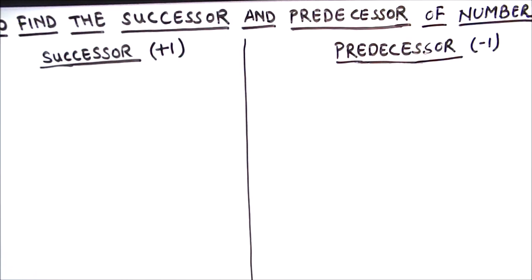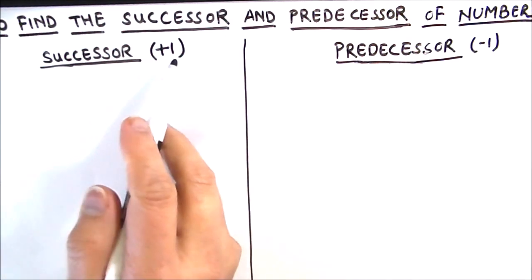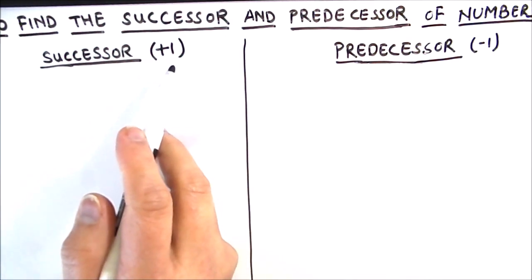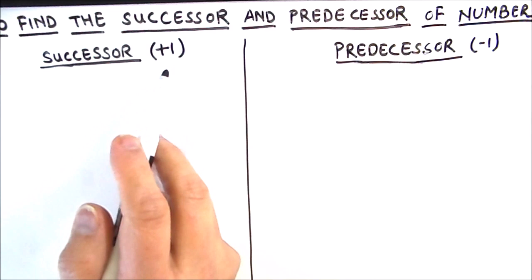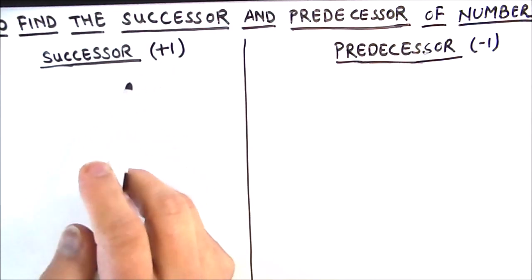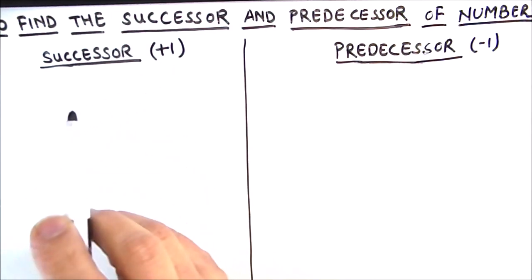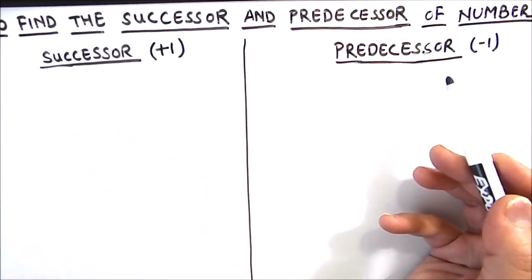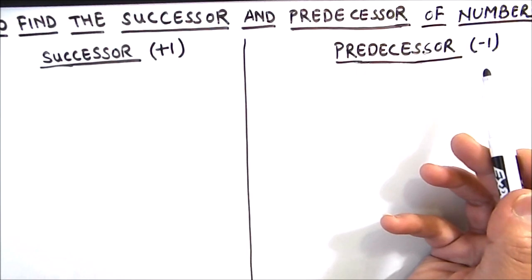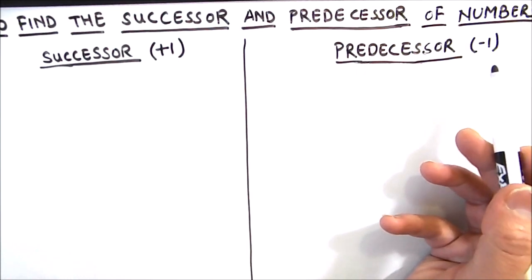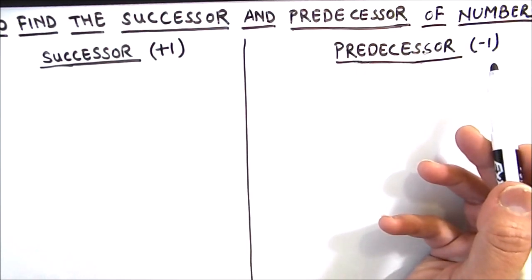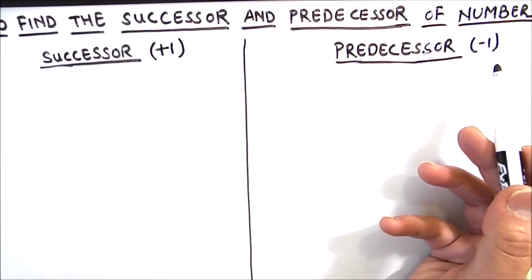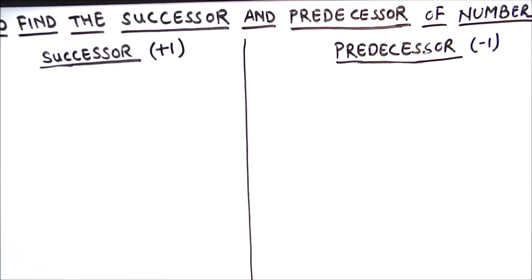Let's start with finding the successor of a number. For finding the successor, we just need to add 1 to the number, whether it is a negative number, a positive number, a rational number, or a whole number. On the other hand, a predecessor is the number we get by subtracting 1 from the number, whether the number is an integer, rational number, or 0.